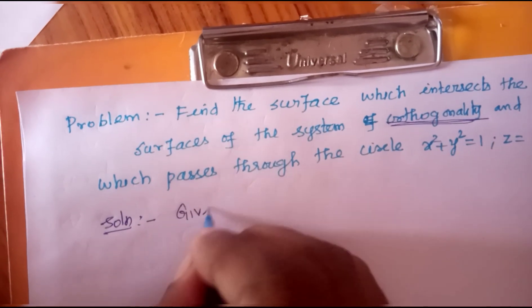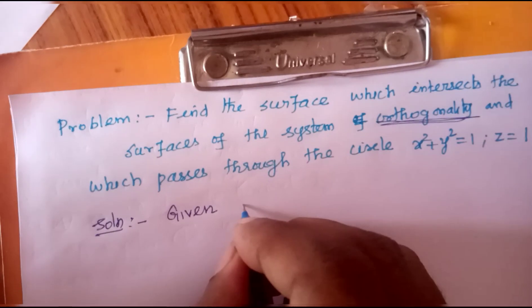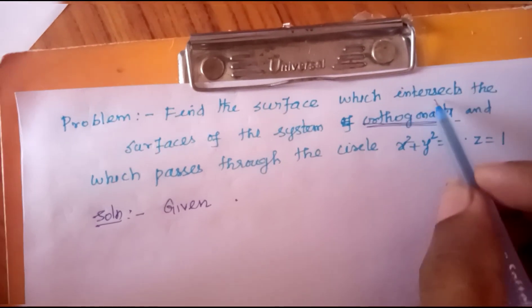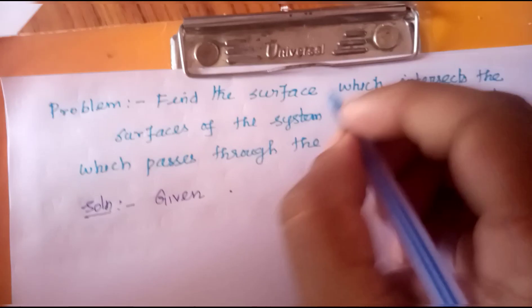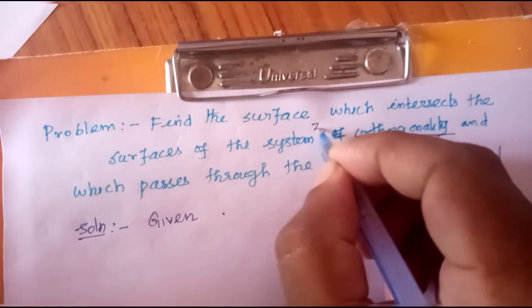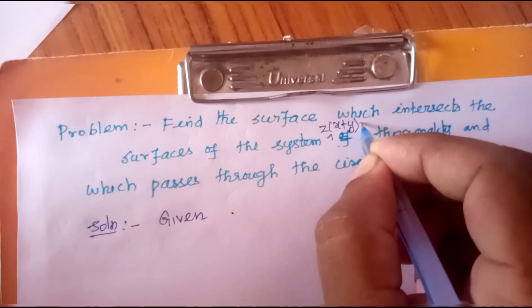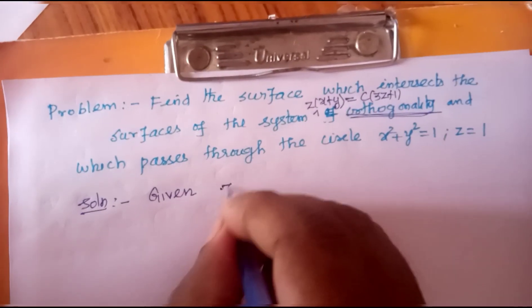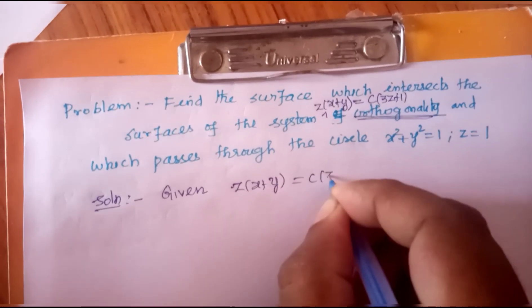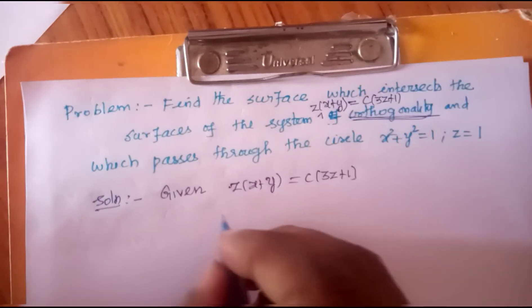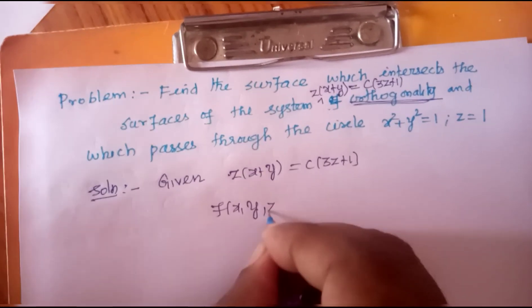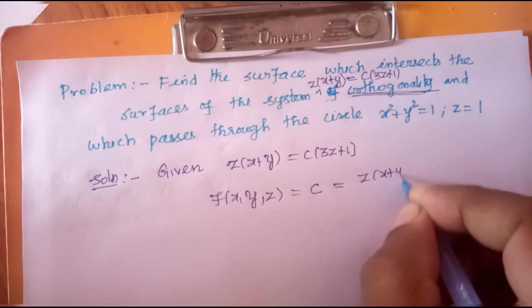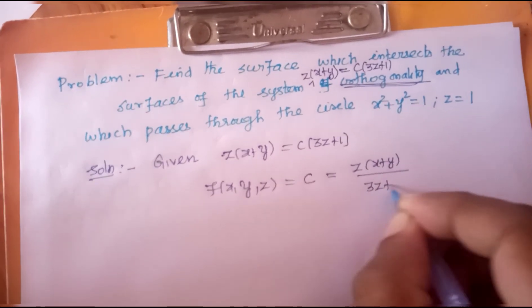Solution. Given: the system of equations. Note the given function: z(x + y) = c(3z + 1). Now find f(x, y, z) = c. That is, f(x, y, z) = z(x + y) / (3z + 1) = c.